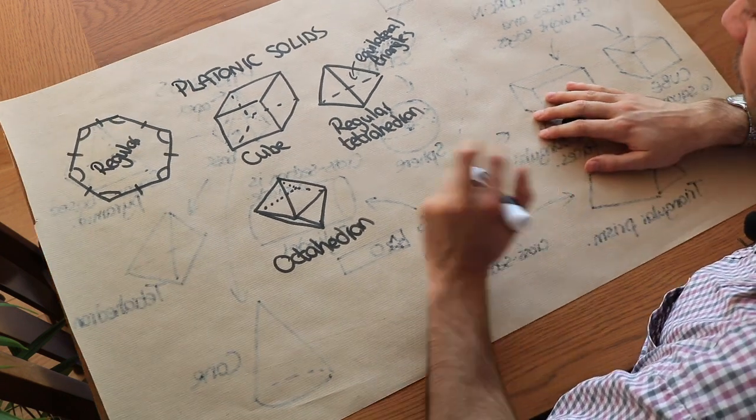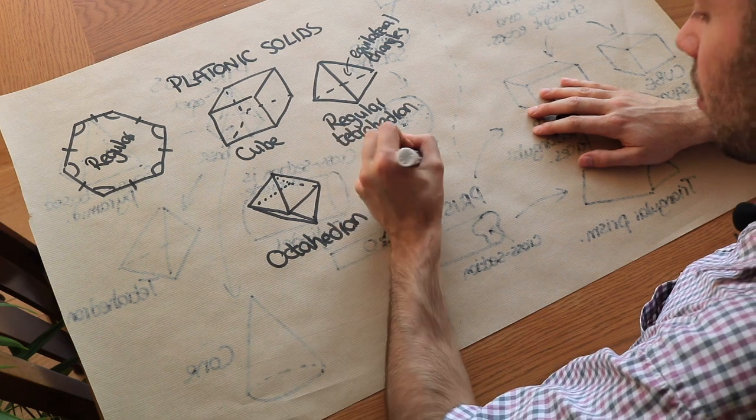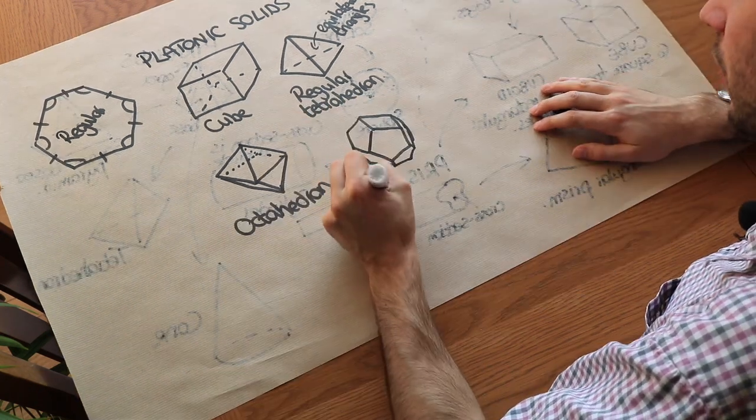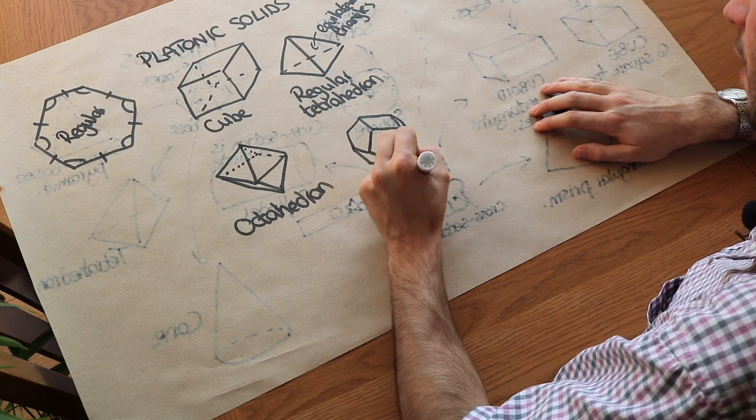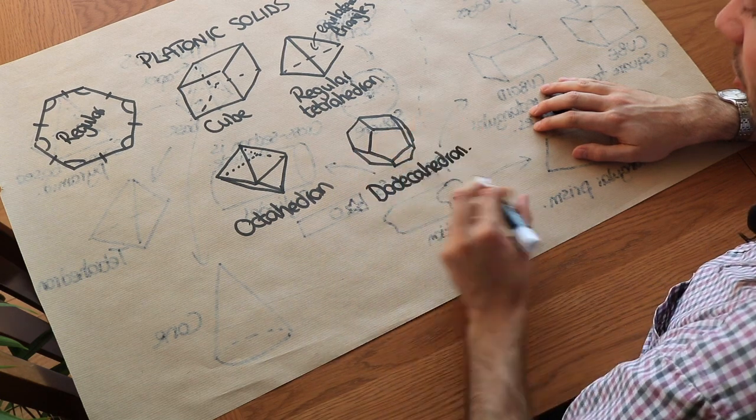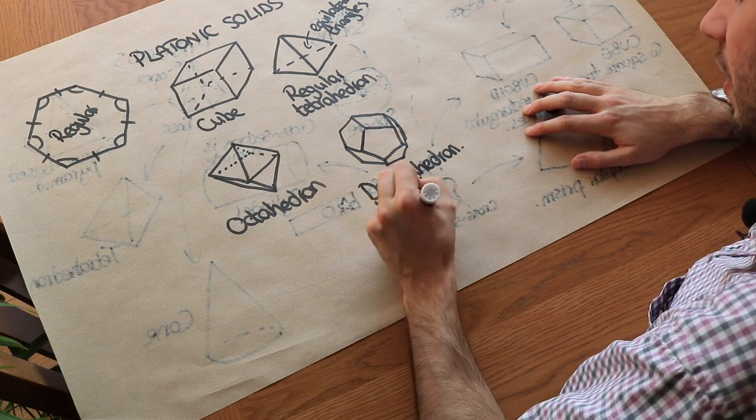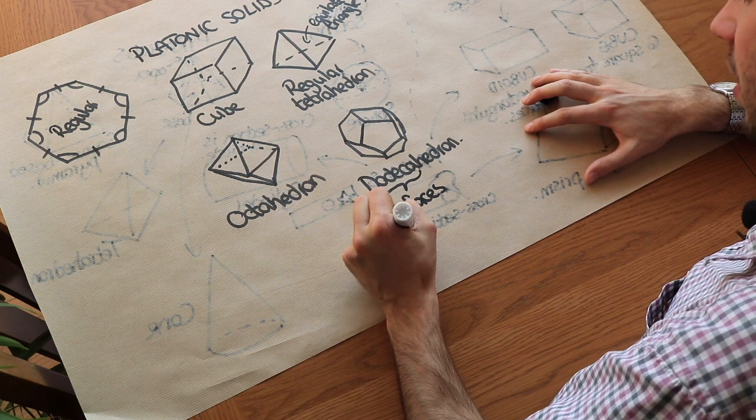And there's more complicated ones which are almost impossible for me to draw. We can put 12 pentagons together and that would be known as a dodecahedron. You may remember from the previous video in 2D shapes that dodeca meant 12. So we have 12 faces and they're all pentagons.